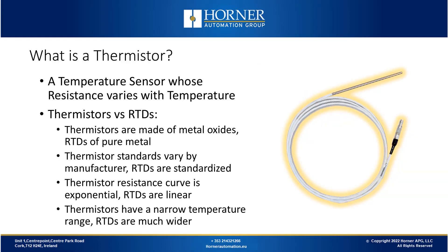A thermistor is a temperature sensor whose resistance varies with temperature, which is the definition of an RTD as well. So we'll compare the similarities, but primarily the differences, between thermistors and RTDs. Thermistors are made of metal oxides or combinations of metals, whereas RTDs are usually pure metals. Thermistor standards vary by manufacturer, whereas RTDs are more standardized. If you buy a PT100 RTD from a manufacturer, the same PT100 specification from a different manufacturer will yield roughly the same results — that's not always true with thermistors.